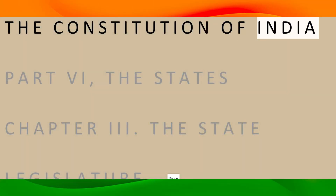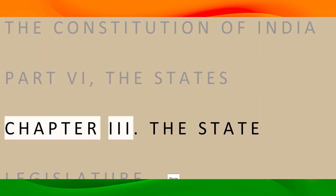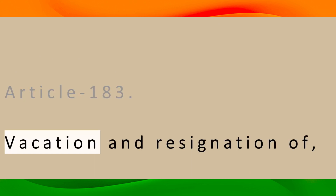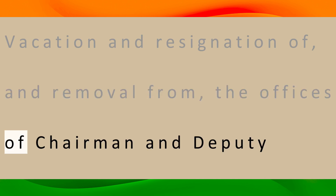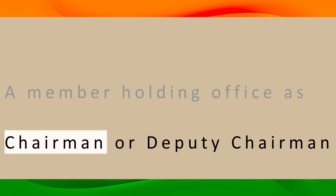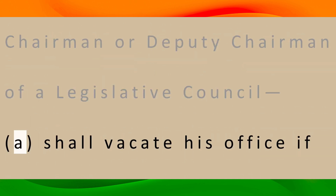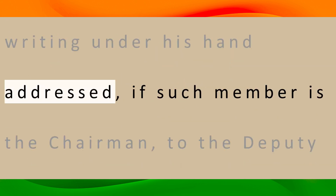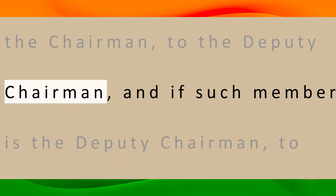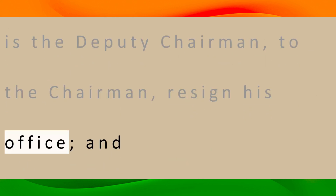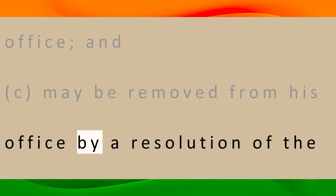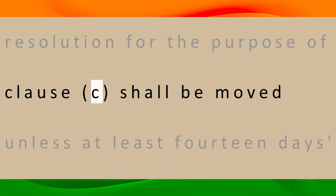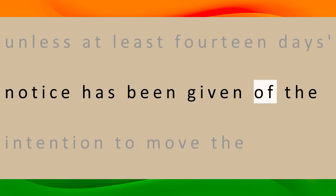The Constitution of India, Part 6 — The States, Chapter 3 — The State Legislature, Officers of the State Legislature, Article 183: A member holding office as Chairman or Deputy Chairman of a Legislative Council (A) shall vacate his office if he ceases to be a member of the Council; (B) may at any time by writing under his hand addressed, if such member is a Chairman, to the Deputy Chairman, and if such member is a Deputy Chairman, to the Chairman, resign his office; and (C) may be removed from his office by a resolution of the Council passed by a majority of all the then members of the Council, provided that no resolution for the purpose of clause (C) shall be moved unless at least 14 days' notice has been given of the intention to move the resolution.